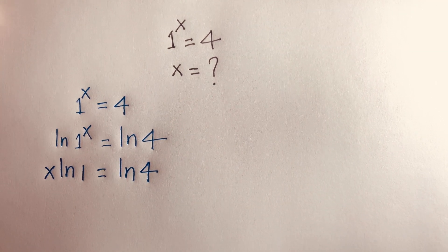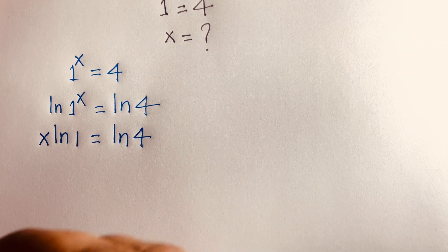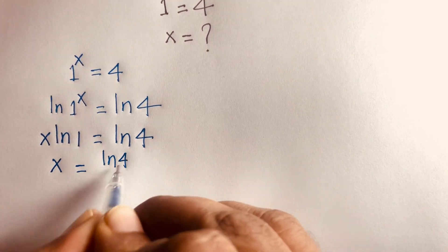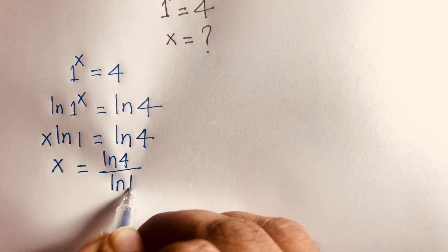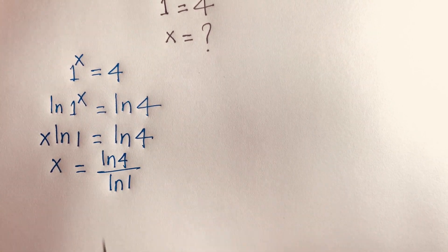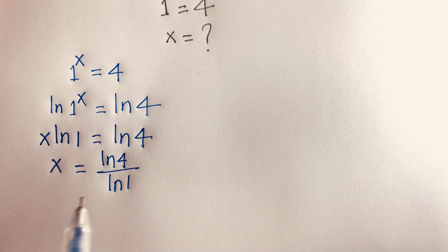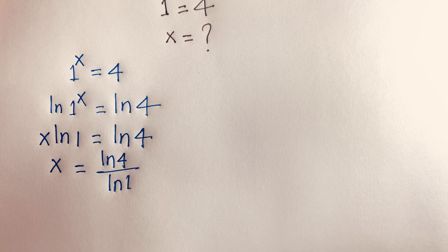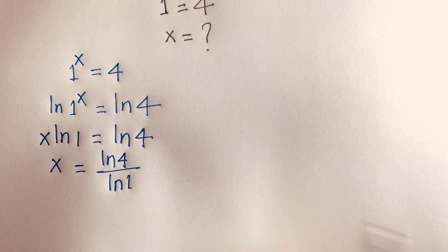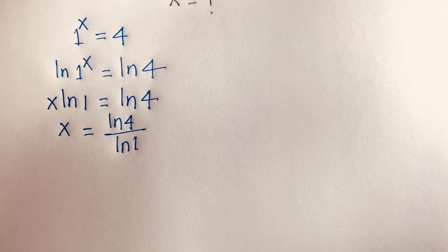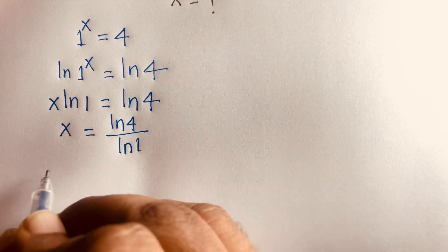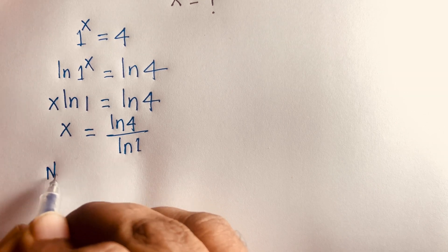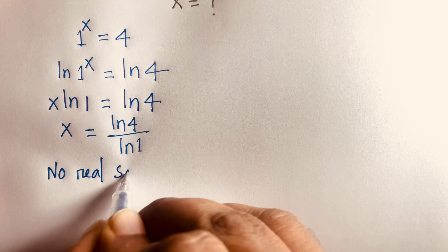Then, if you divide both sides by ln 1, I can say x is equal to ln 4 over ln 1. But ln 1 equals 0, so this is undefined. At this moment, we cannot find a good result, so x is undefined — there is no real solution.